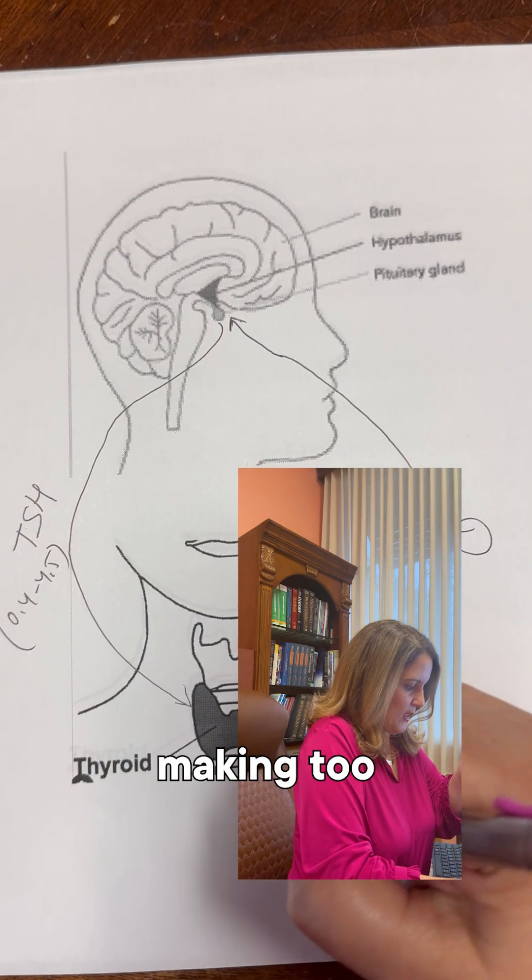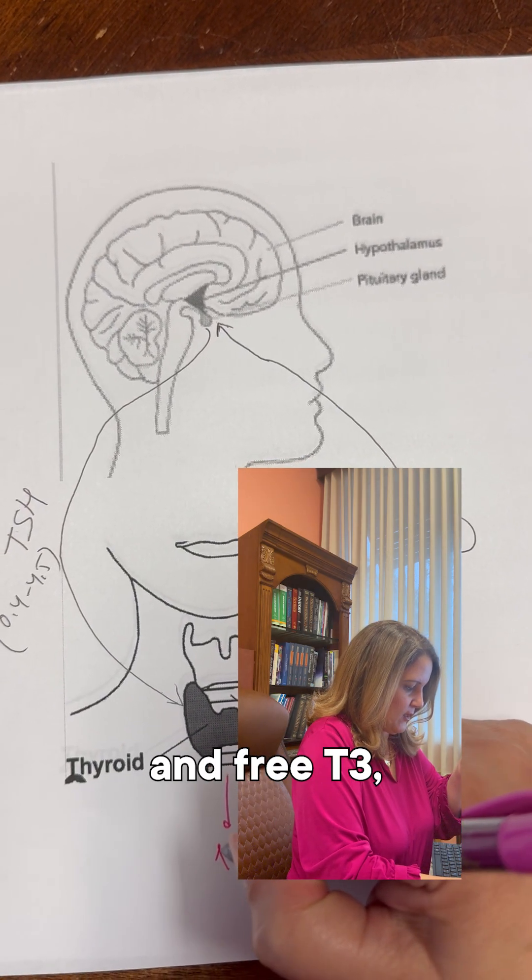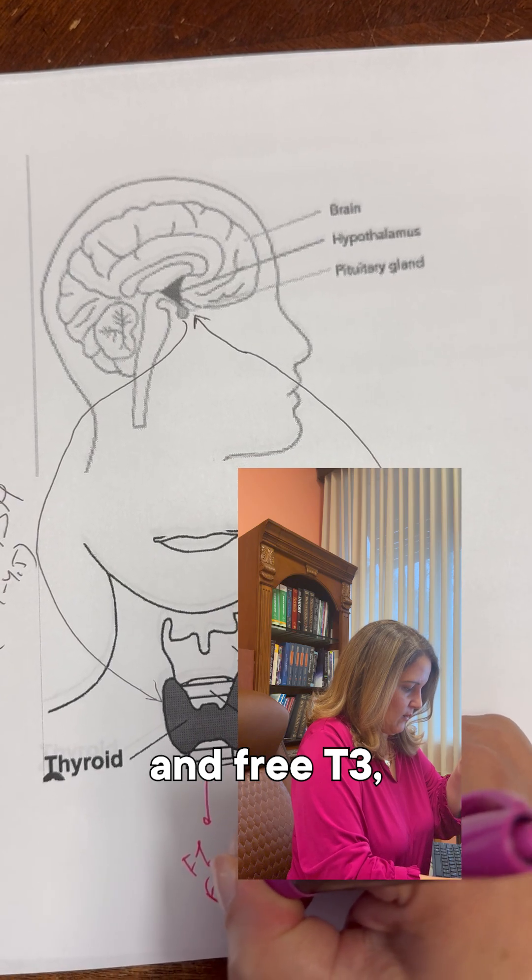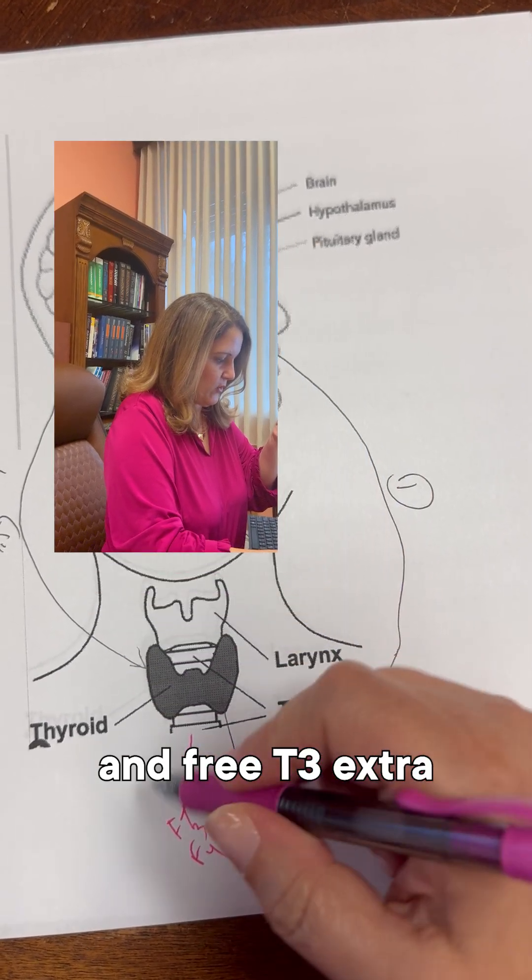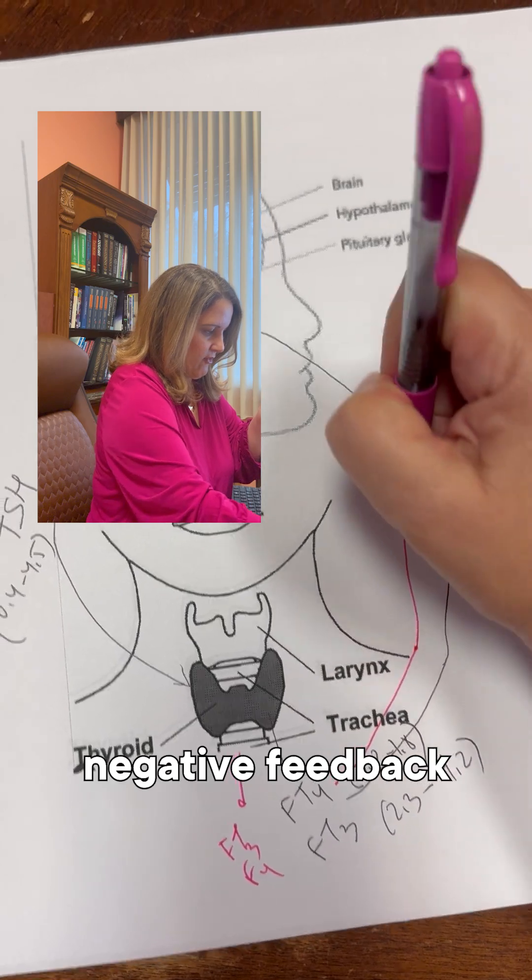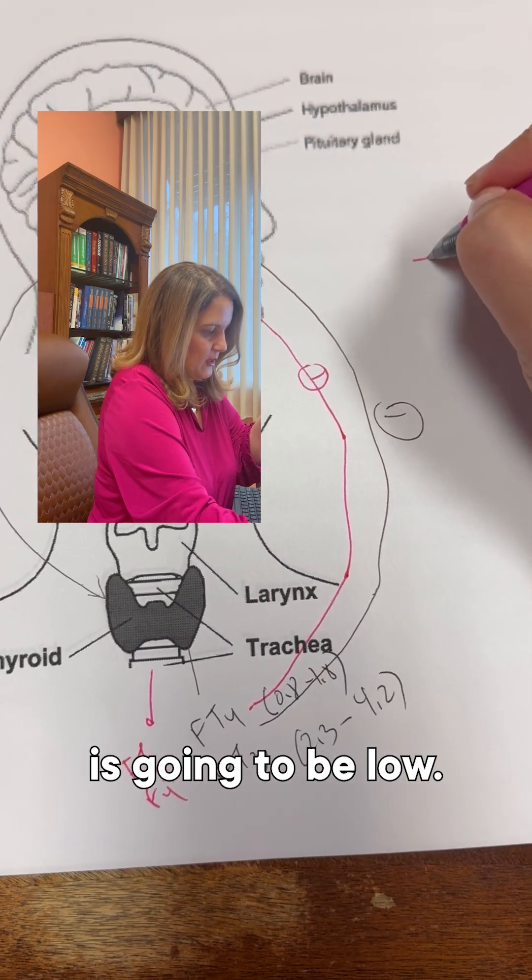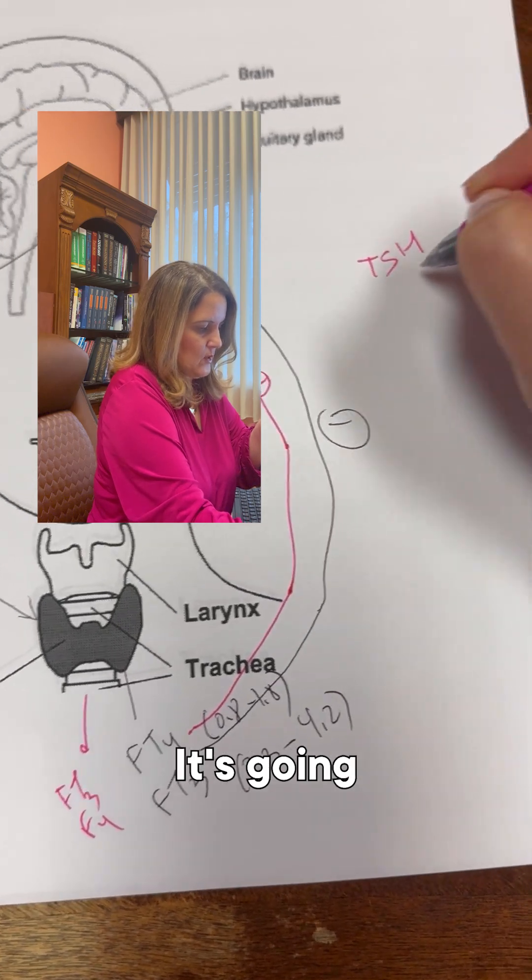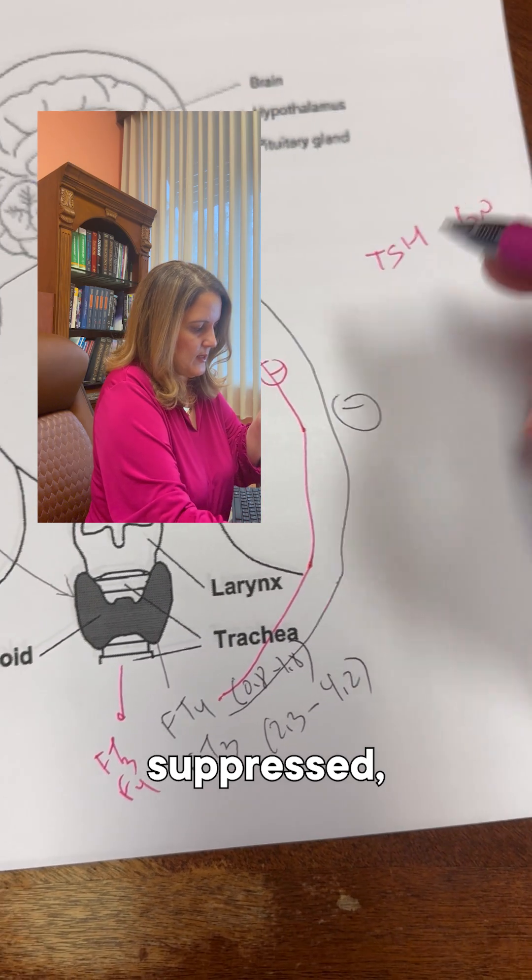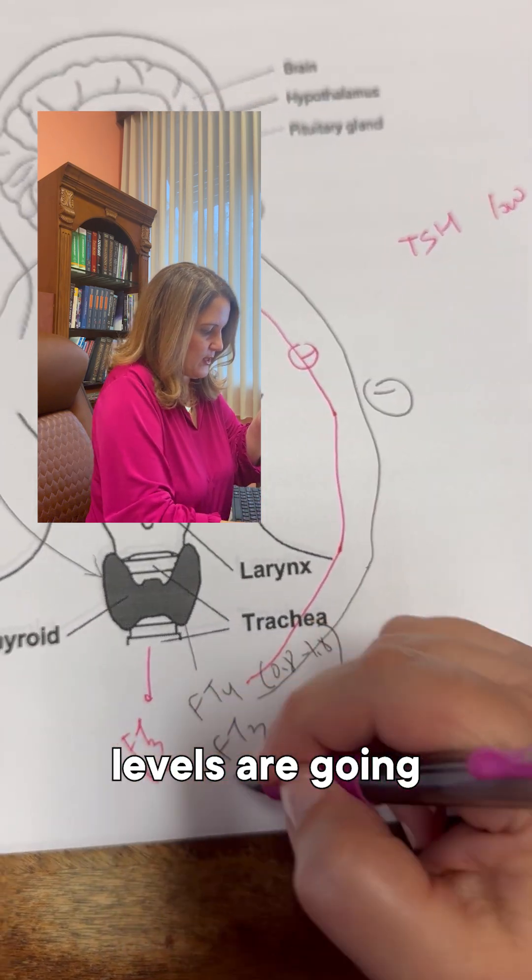Now, if the thyroid starts making too much free T4 and free T3, then you're going to have extra negative feedback on the pituitary and the TSH is going to be low, suppressed. The free T4 and free T3 levels are going to be high.